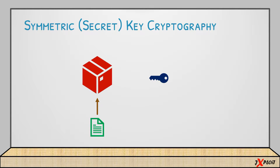A day later, I share that key with one of my friends. My friend opens the box and takes the confidential files — I'm okay with that because I trust him. The important point here is that both of us use the same key to lock and unlock the box. Symmetric key cryptography also uses a similar process — a single key for its operation.